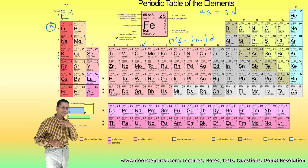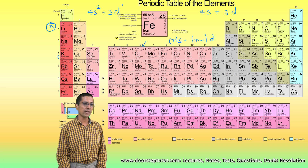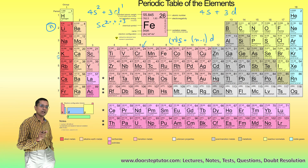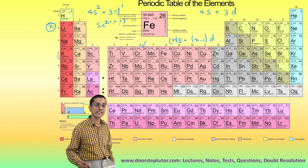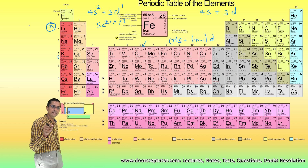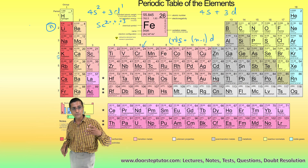Let us take the example of Scandium. Scandium has the configuration 4S2 plus 3D1, and Scandium exhibits valencies of +1, +2, and +3. In the case of the +1 valency, only the D subshell electrons are lost. For the +2 and +3 valencies, the 4S electrons are also participating.